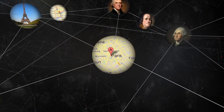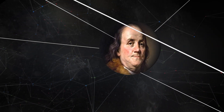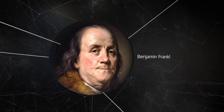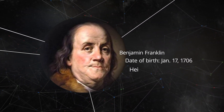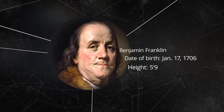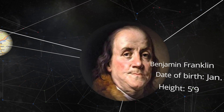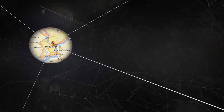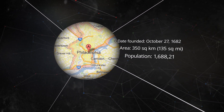For example, for a famous person, we collect relevant data about them, such as their date of birth or how tall they are. We can also connect that person to closely related objects in the knowledge graph.